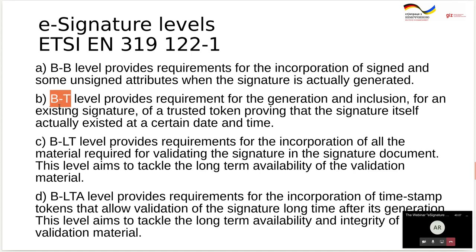The lowest level, B-B (basic), does not carry any revocation data for the private key. The next level, B-T, is basic with a trusted timestamp applied to the signature. By default, if you do not use a timestamp trust service, the signing software uses your local computer time — which you can set to anything and is therefore not trusted. A trusted timestamp service gives you a verified signing time for the document.